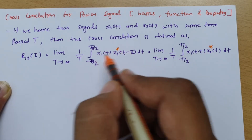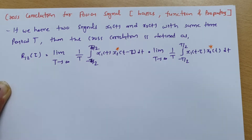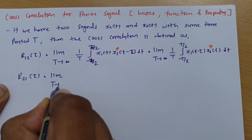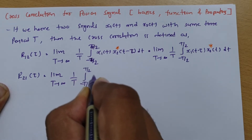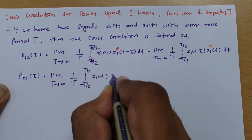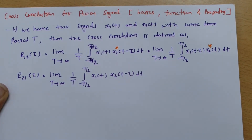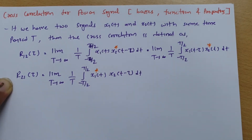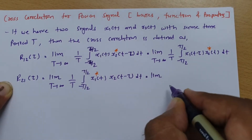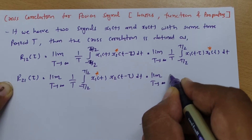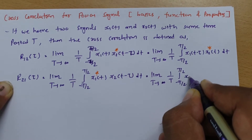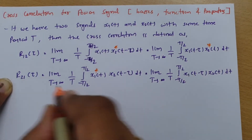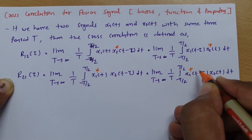You can shift either x1 or x2, but the conjugate should be given to x2 in the case of r12 calculation. If you calculate r21, then it will be: limit as T tends to infinity, 1/T, integration from minus T/2 to T/2, of x1(t) into x2(t minus τ) dt, where here we calculate correlation of the second with the first, so the conjugate should be given to x1(t). Similarly, we can shift x1: limit T tends to infinity 1/T, integration from minus T/2 to T/2 of x1(t minus τ) x2(t) dt, and here the conjugate must be given to x1.